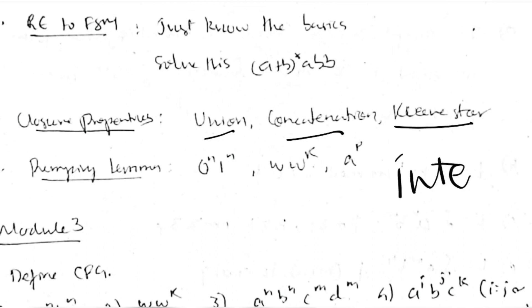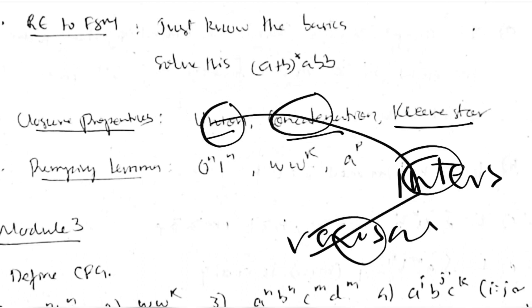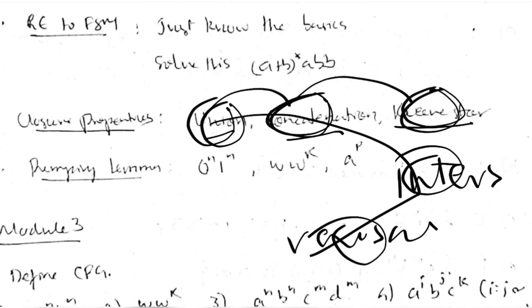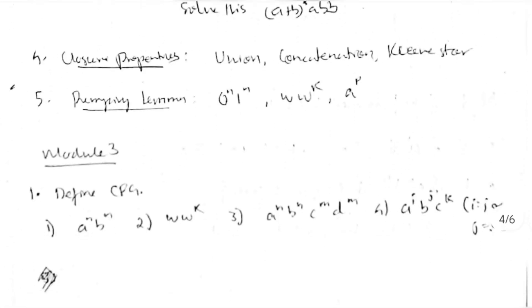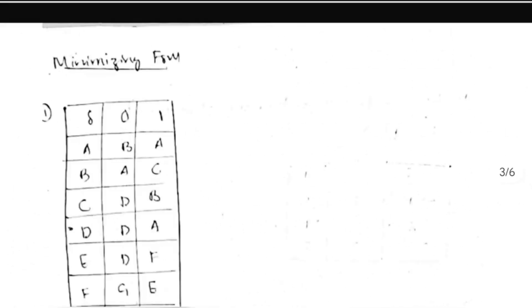For pumping lemma, you need to write the proof — the theorem statement and proof — and then there are three most-repeated questions. Studying those three is sufficient for passing. Closure properties and pumping lemma are equally important as 'or' options. That covers Module 2.